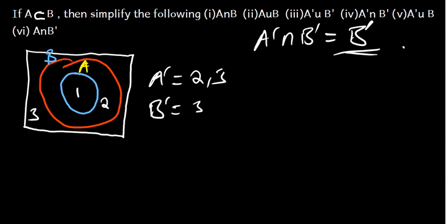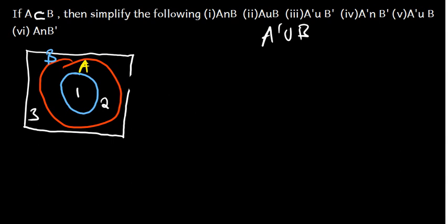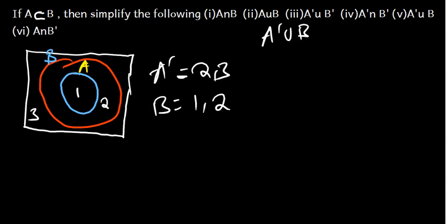We have Part 5, asking us to simplify A complement union B. From the Venn diagram, our A complement is 2 and 3. Our B is 1 and 2. Putting these elements together, we get 1, 2, 3. But 1, 2, 3 is the same as the universal set. So, A complement union B gives us the universal set.